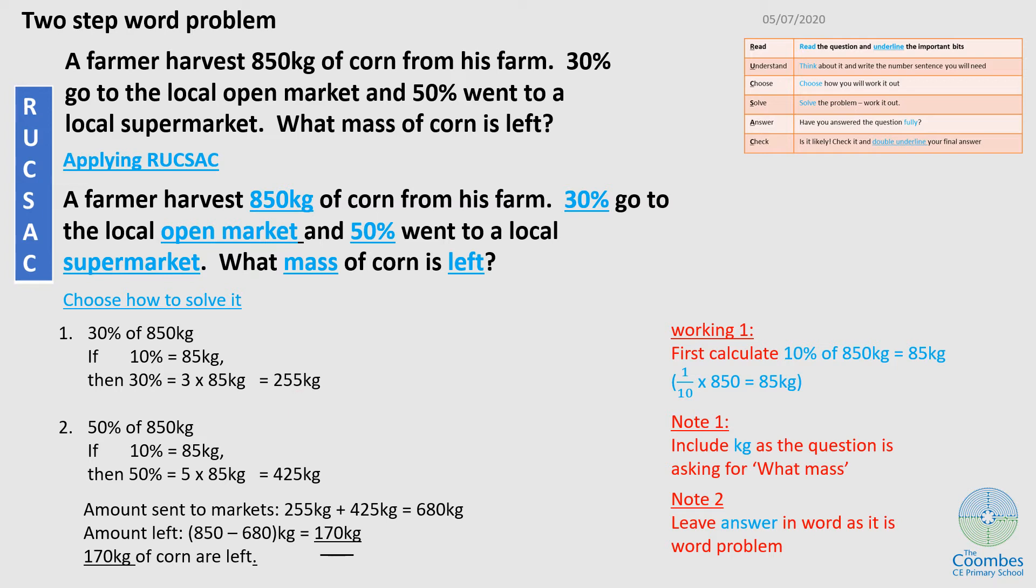So that means 255 kg was sent to open market. And because I've also calculated 10%, I can apply that to the 50%. 10% is 85 kg. So 50% is five lots of that. So that's five times 85 kg. And that should give me 425 kg.